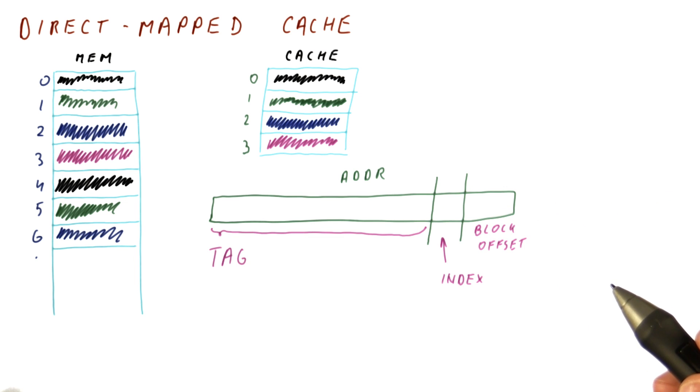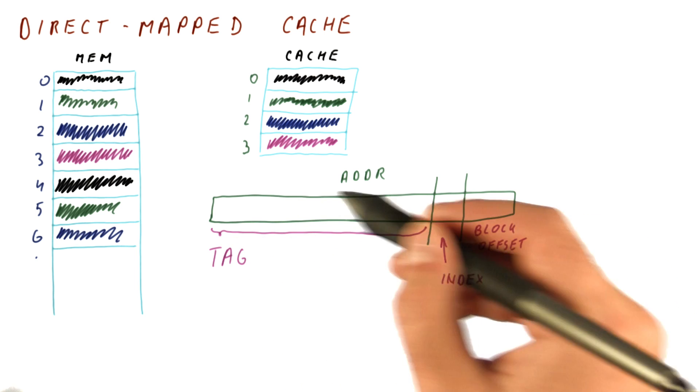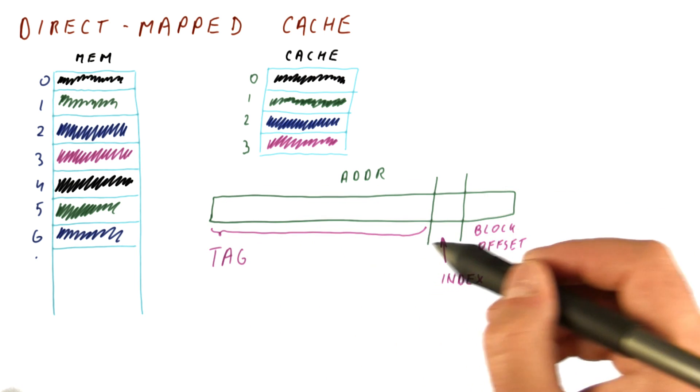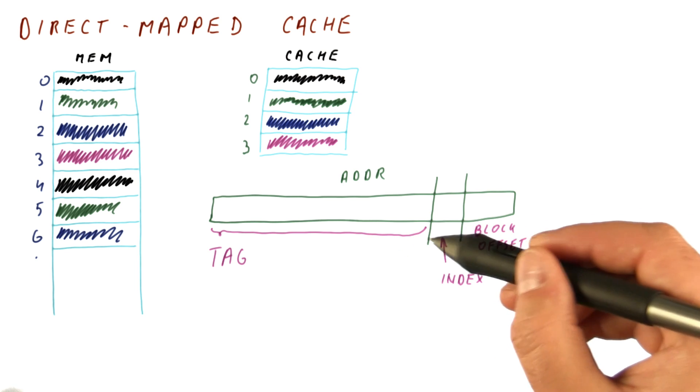And the remaining bits of the address are now the tag. Now there is an interesting question of why the tag does not include the full block number. So why doesn't the tag cover also the index bits?